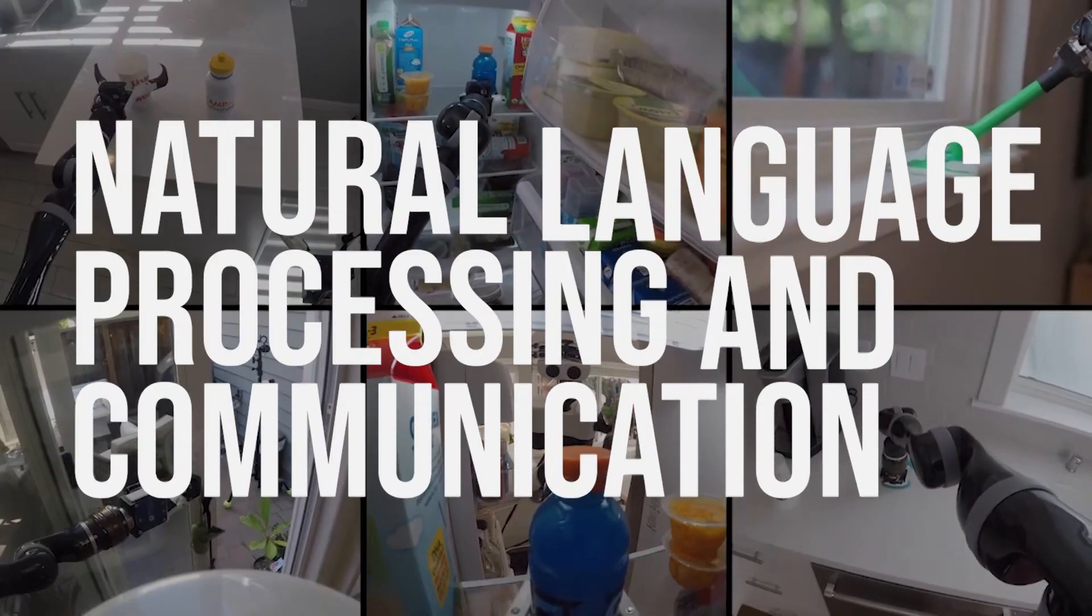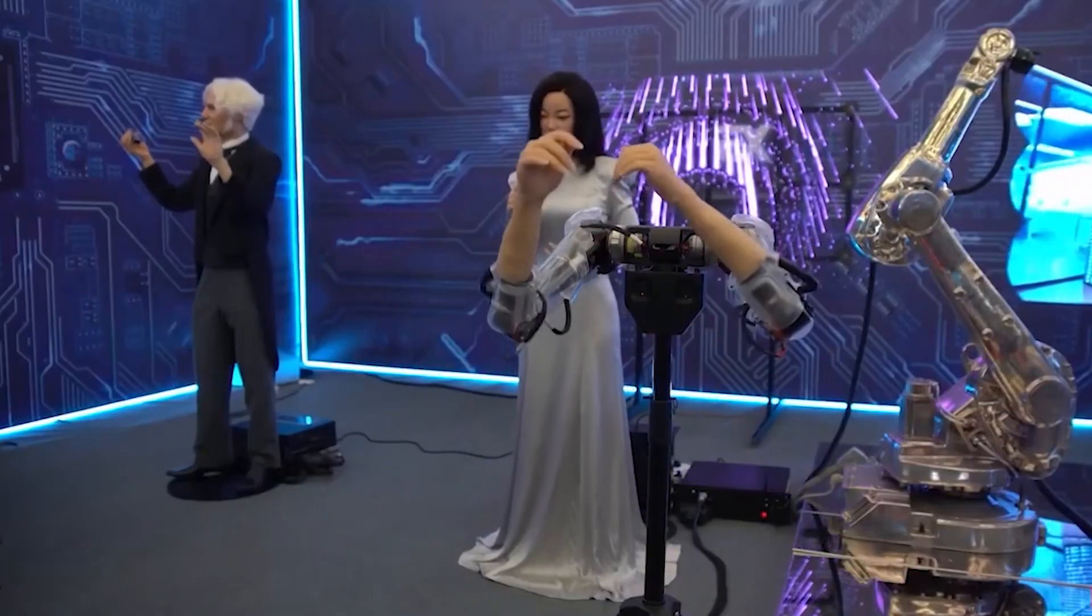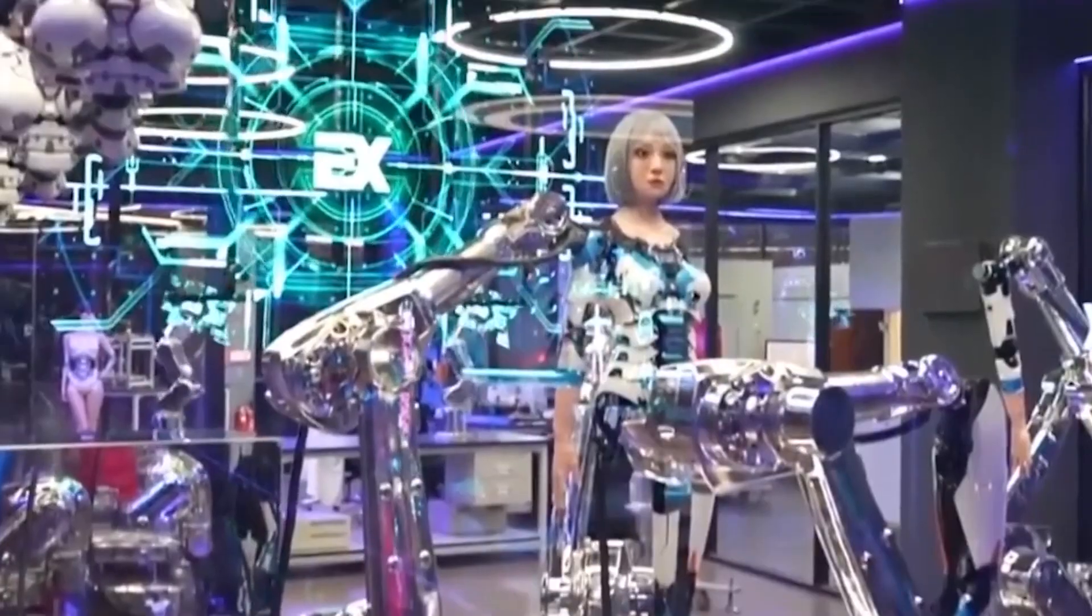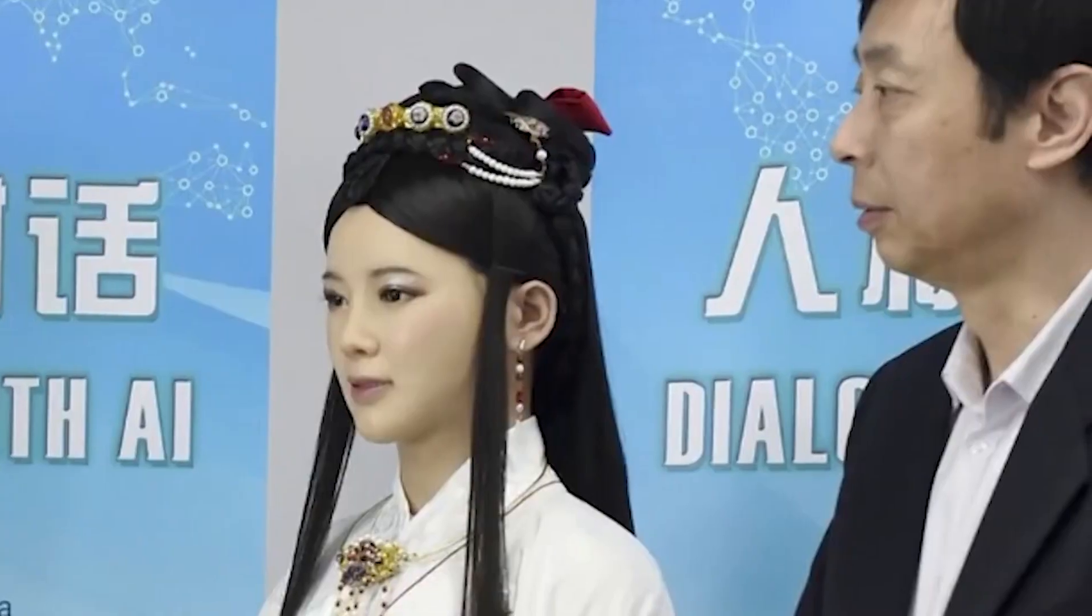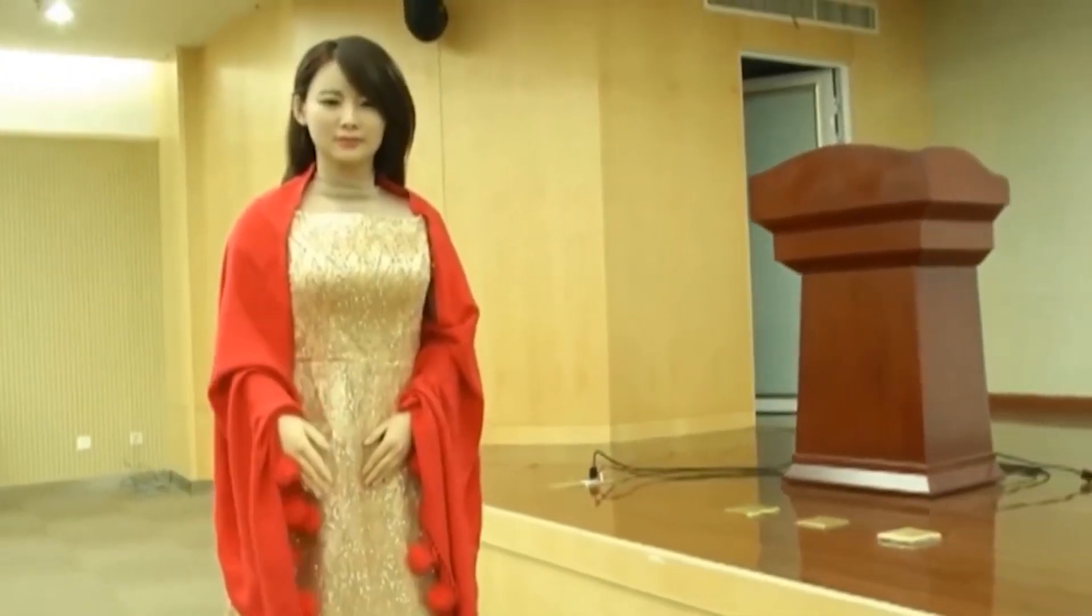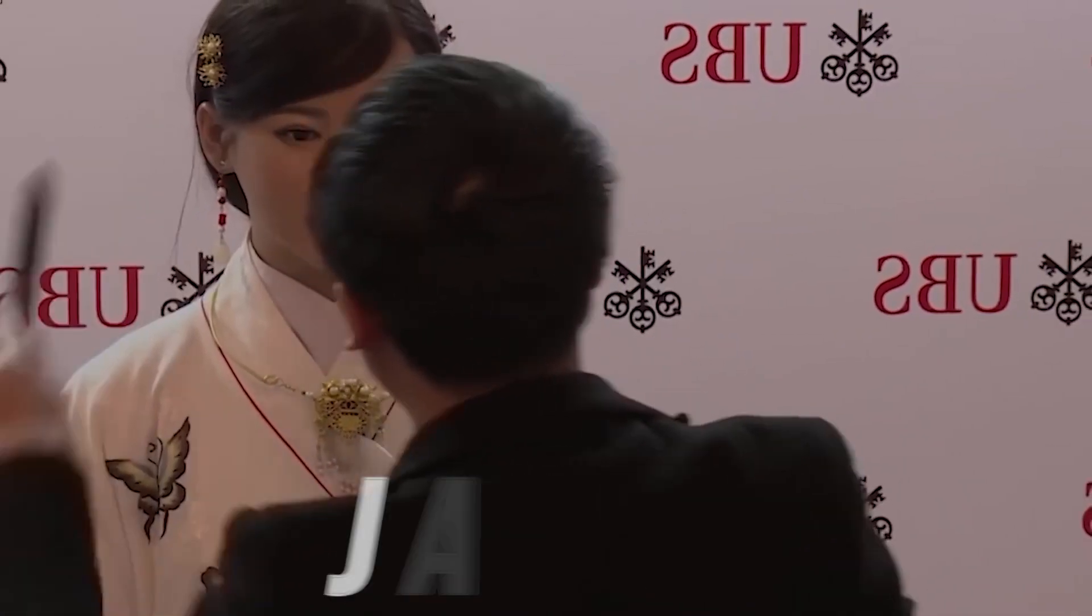Another feature of Jiajia is her natural language processing and communication. Jiajia can interact directly with humans, answering questions that are asked of her. She can also recognize different faces, gestures, and voices and respond accordingly. Jiajia can also adapt to different cultures and languages by changing her appearance and voice. For example, she can speak English, Chinese, or Japanese, depending on the situation.